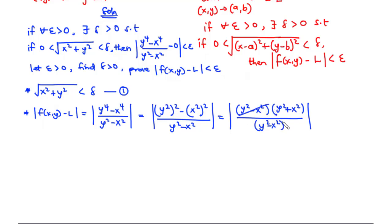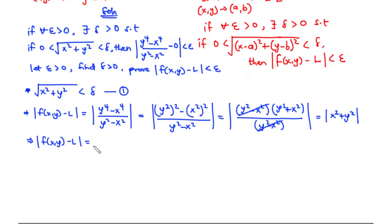We can cancel out the common factor (y² minus x²), and we have this equal to the absolute value of y² + x², which we can write as the absolute value of x² + y² since addition is commutative. Since x² + y² is always positive, we can drop the absolute value sign, so the absolute value of f(x, y) minus L equals x² + y².